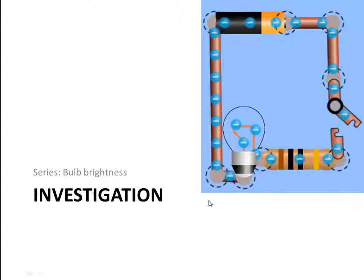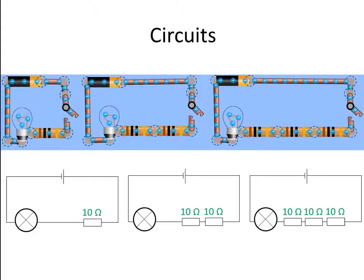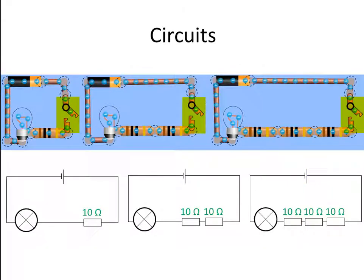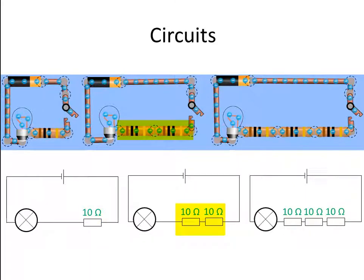Let's investigate the effect of resistance on bulb brightness for a series circuit. We're going to build these three circuits. All three have a 9-volt battery with a positive terminal on the right-hand side. All the circuits have a switch, though that's not shown in the circuit diagram. Each circuit has a bulb. The first circuit has one 10-ohm resistor in series with the bulb, the second has two 10-ohm resistors in series, and the third has three 10-ohm resistors also in series with the bulb.